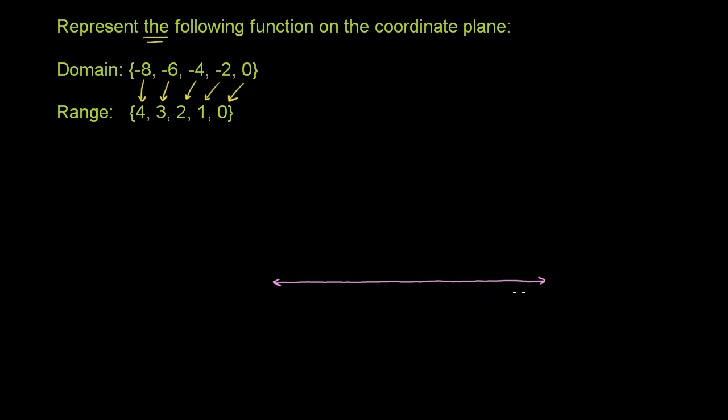Let me give a lot more space to quadrant 2. All of our range are positive numbers, so we're going to be in the top left quadrant. The domain values are 0 through negative 8, every even negative number.